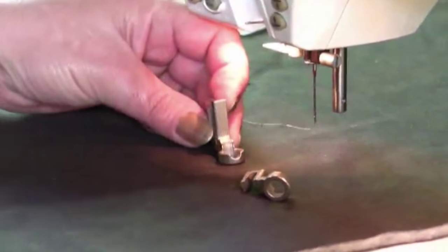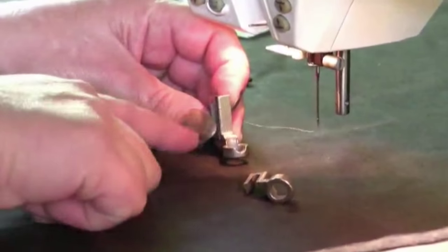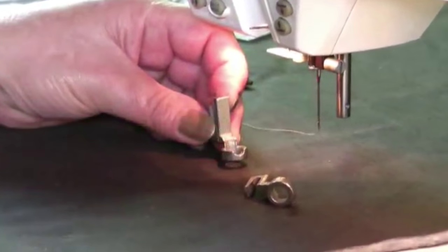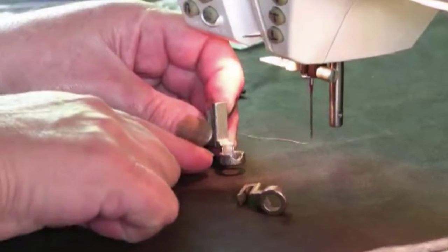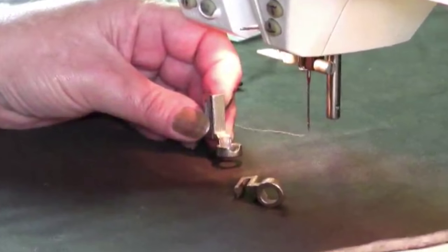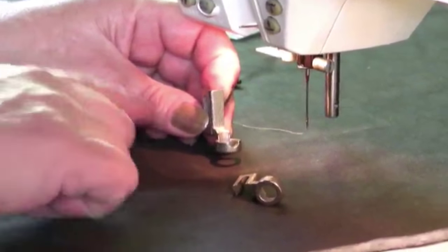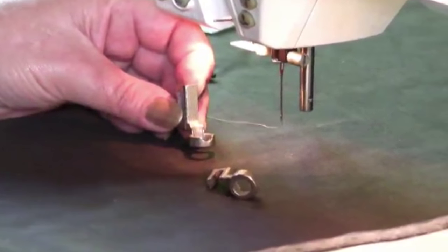When we designed our ruler foot, we wanted it to be able to stitch a quarter inch from the edge of the foot in all directions, giving us a stitch line a quarter inch from our templates. So our foot measures a half inch all the way around.